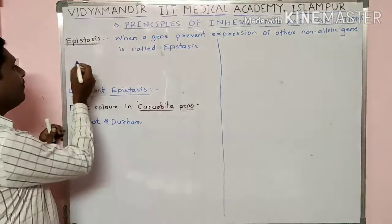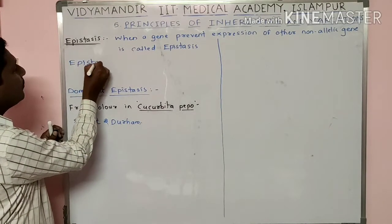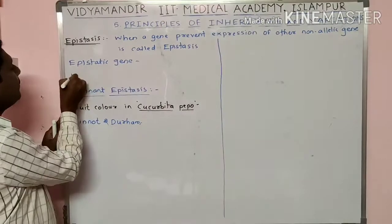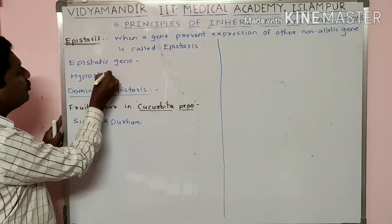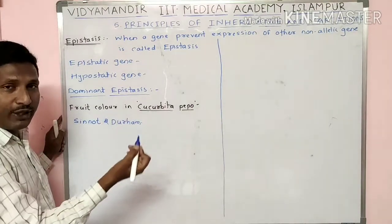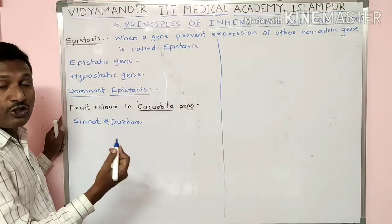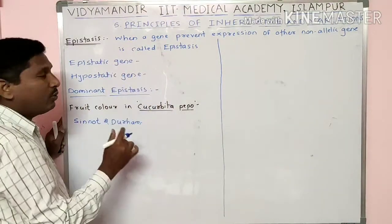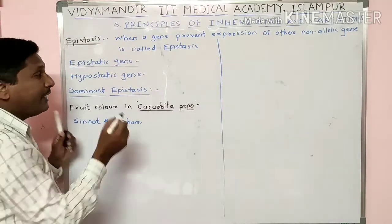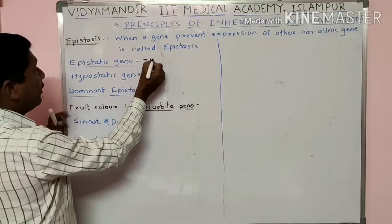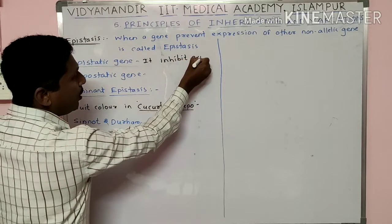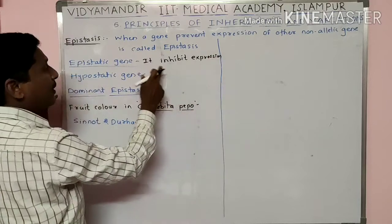The gene which prevents the expression of the other is called the epistatic gene, and the gene whose expression is inhibited by the other gene is known as the hypostatic gene. The epistatic gene suppresses or inhibits the expression of the other gene.